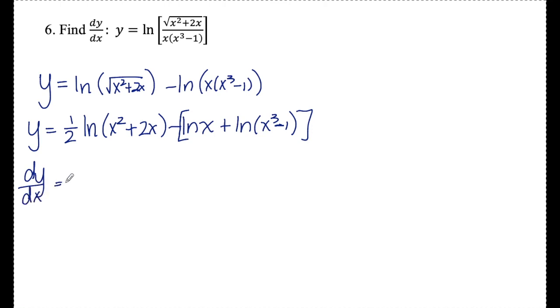For dy/dx: I brought down the 1/2, so it's (1/2)·(2x + 2)/(x² + 2x) - 1/x - 3x²/(x³ - 1). Way easier than doing a gigantic quotient and product rule chain if I didn't split all this up to begin with.